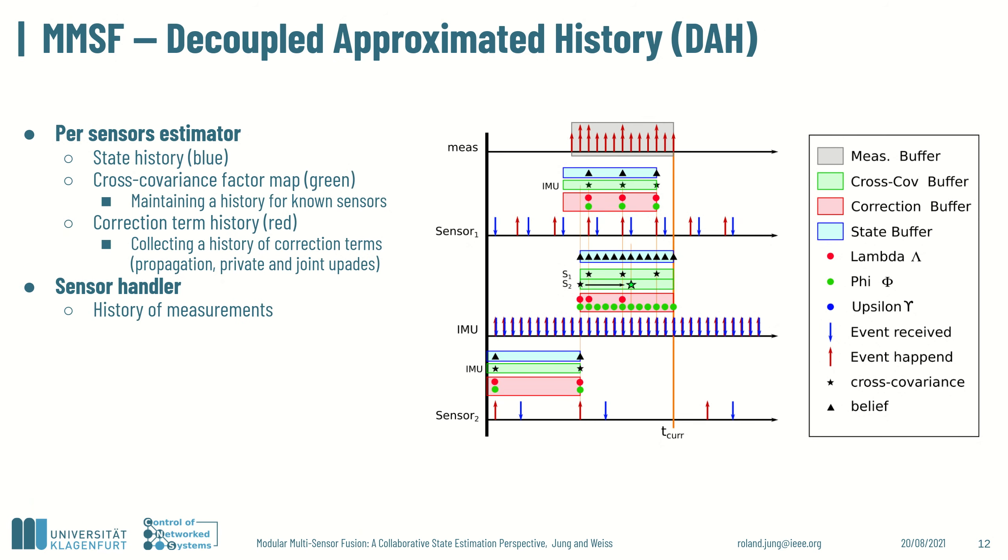In our manuscript, we added a pseudocode providing detailed insights in the decoupled approximated history approach. As already mentioned, the sensor handler is buffering the recent measurements up to the supported maximum sensor delay. Each sensor estimator requires two fixed time horizon buffers for maintaining a history of beliefs and the correction term for the cross-covariance factors. And a map holding the history of factorized cross-covariances to n other sensors. We identified for each filter step a correction term, denoted as phi for propagation, psi and lambda for private and joint updates respectively.